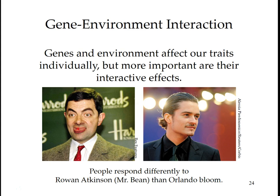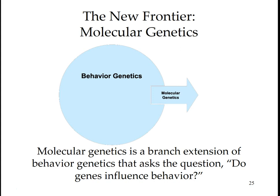Molecular genetics is a branch extension of behavior genetics. We are products of interactions between our genetic predispositions and our surrounding environments. A baby who is genetically predisposed to be social and easy-going may, in contrast to one who is less so, attract more affectionate, stimulating care and thus develop into a warmer, more outgoing person. Similarly, a stressful environment can trigger genes that affect the production of neurotransmitters that underlie depression.